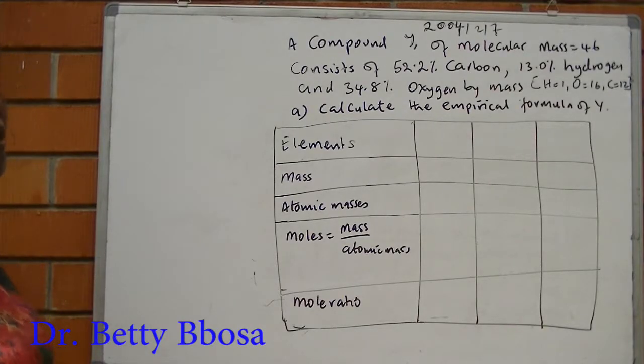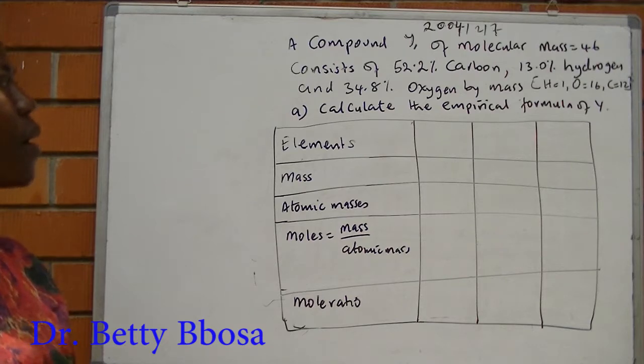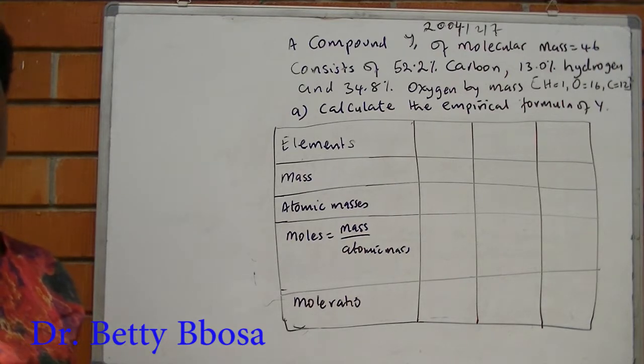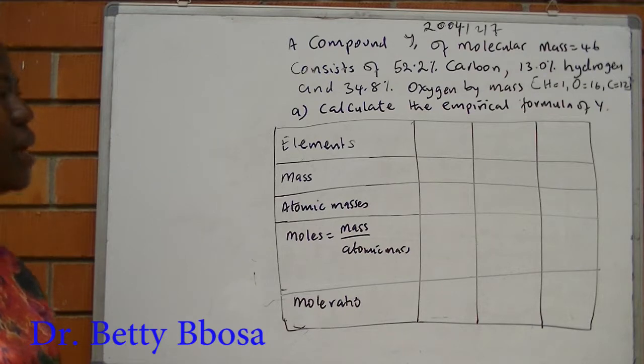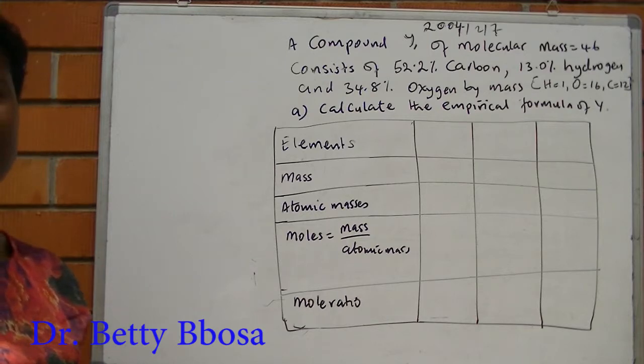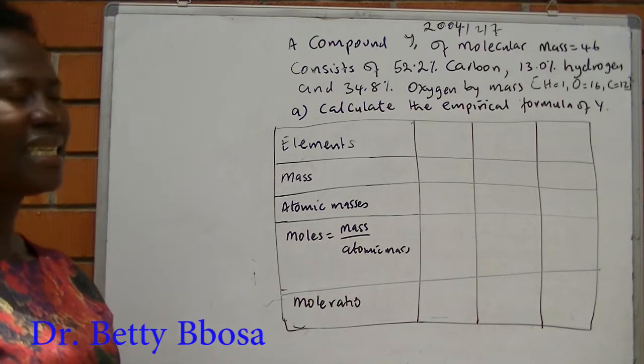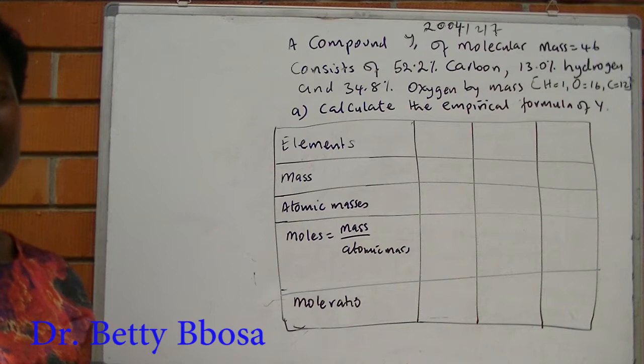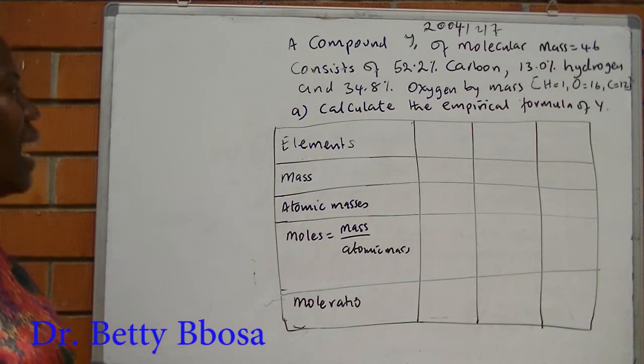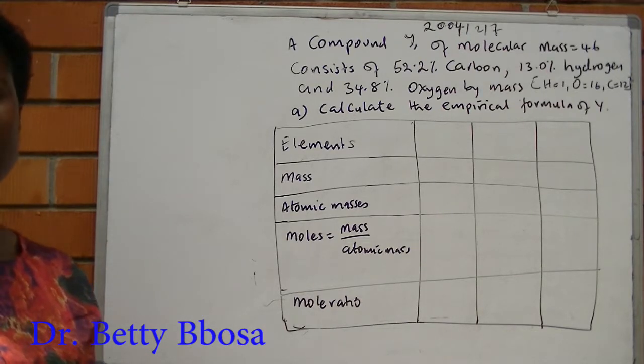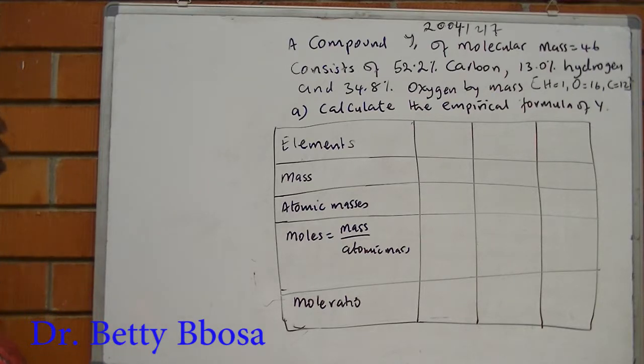Example is obtained from 2004, paper 2, number 7. A compound Y of molecular mass 46 consists of 52.2% carbon, 13.0% hydrogen, and 34.8% oxygen by mass. Calculate the empirical formula of Y.